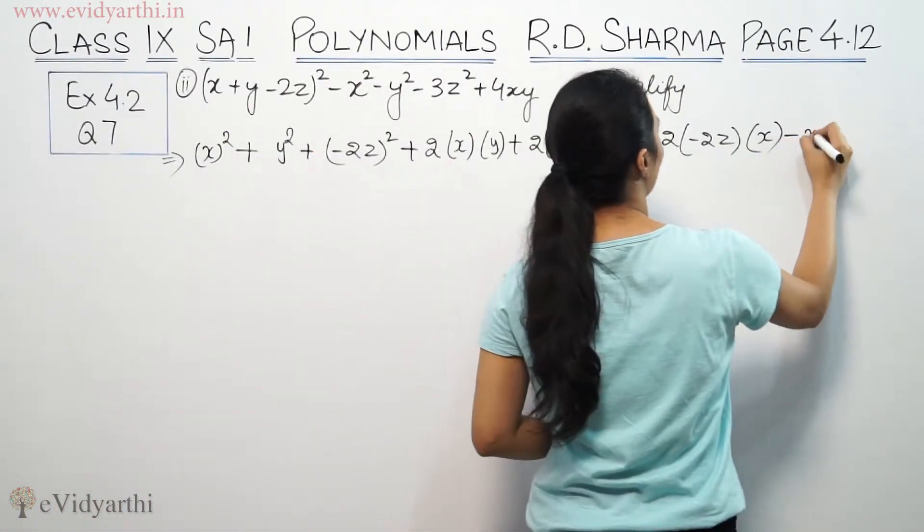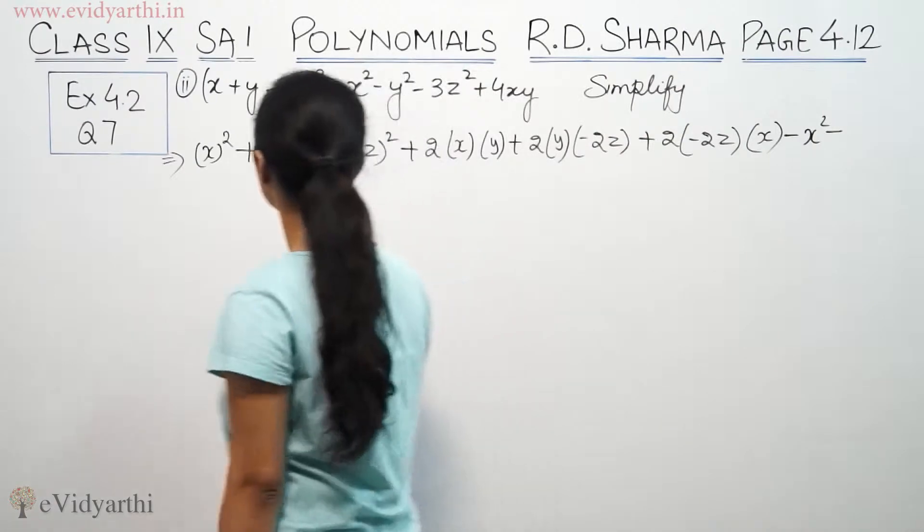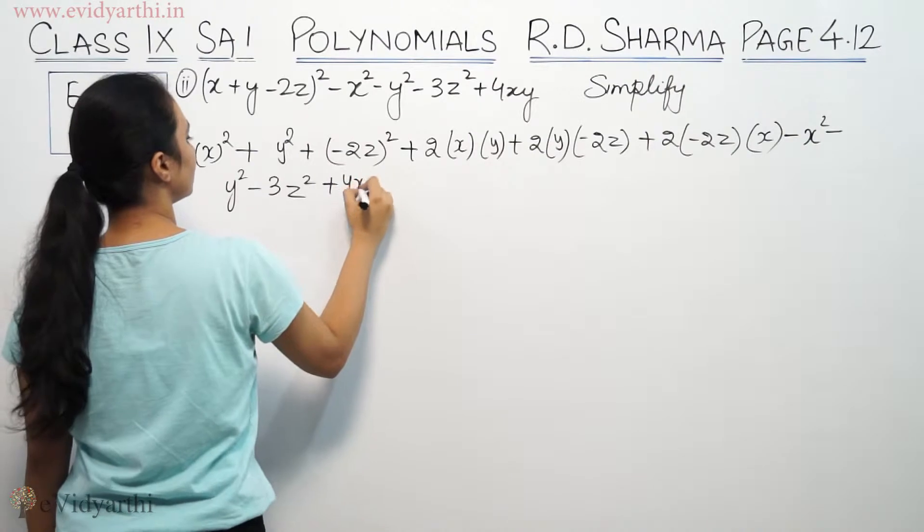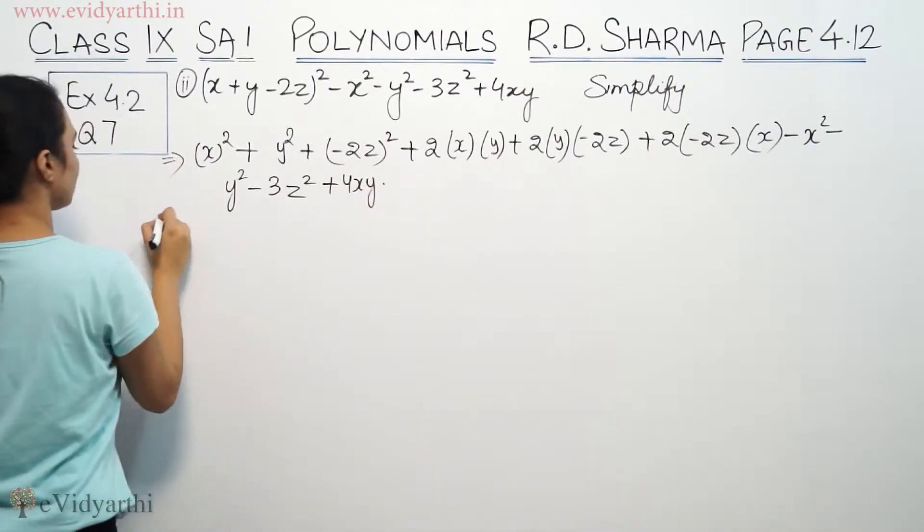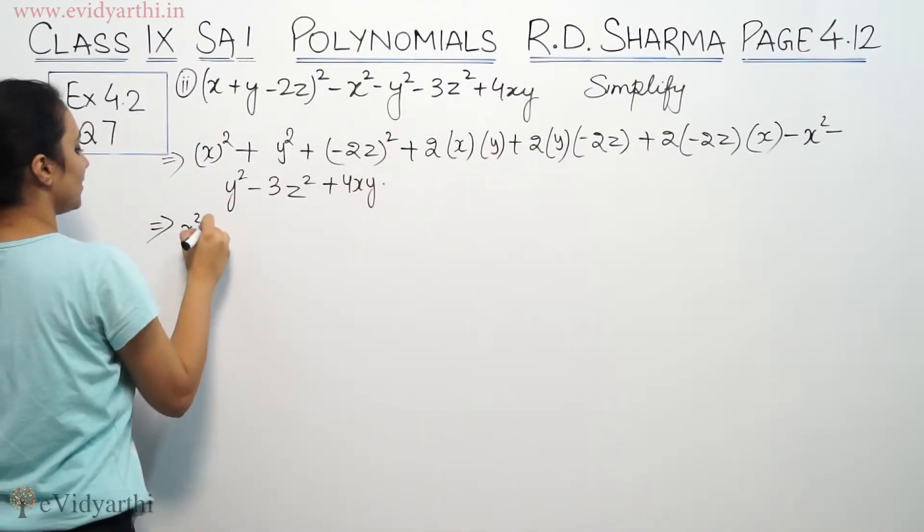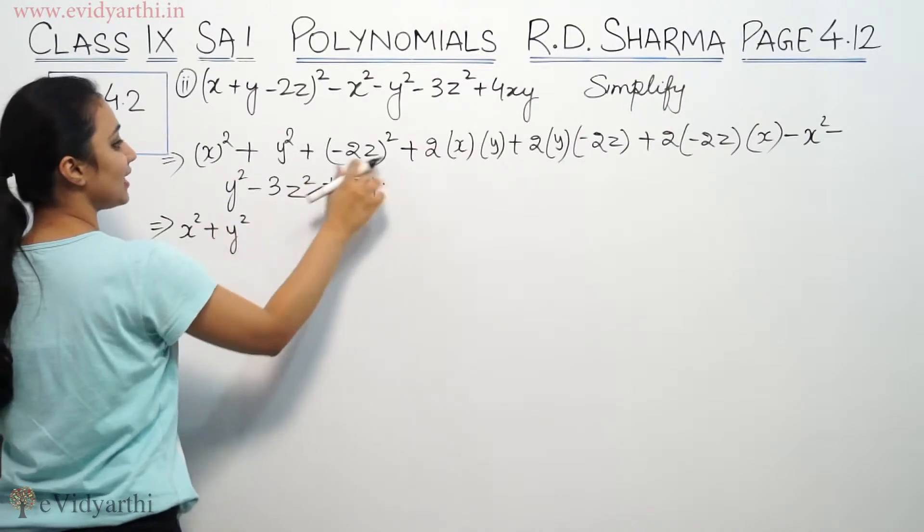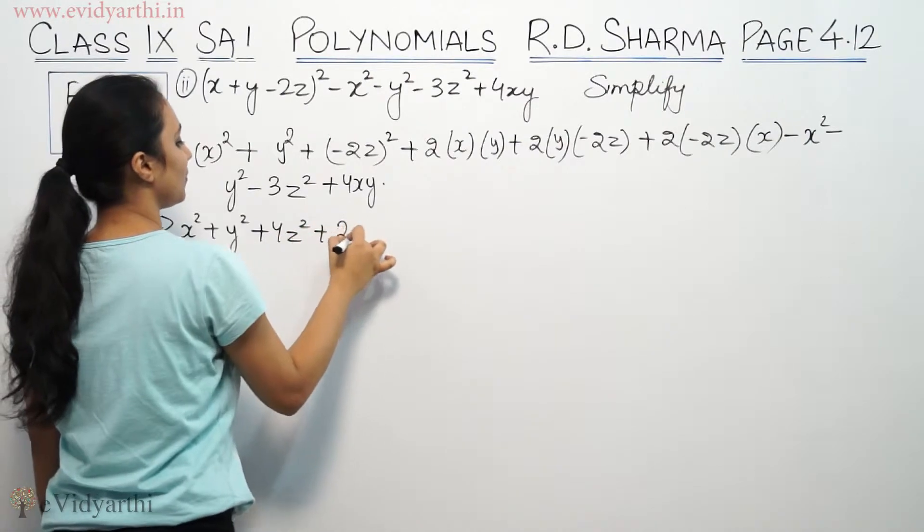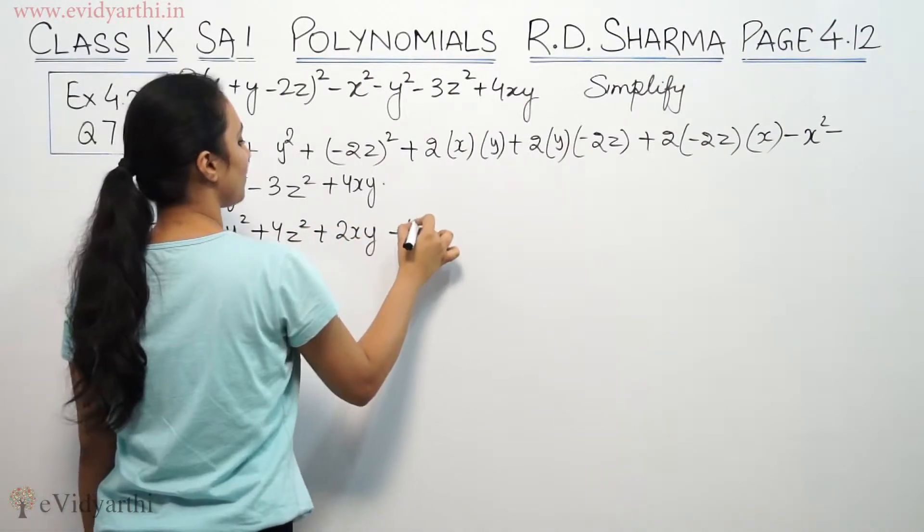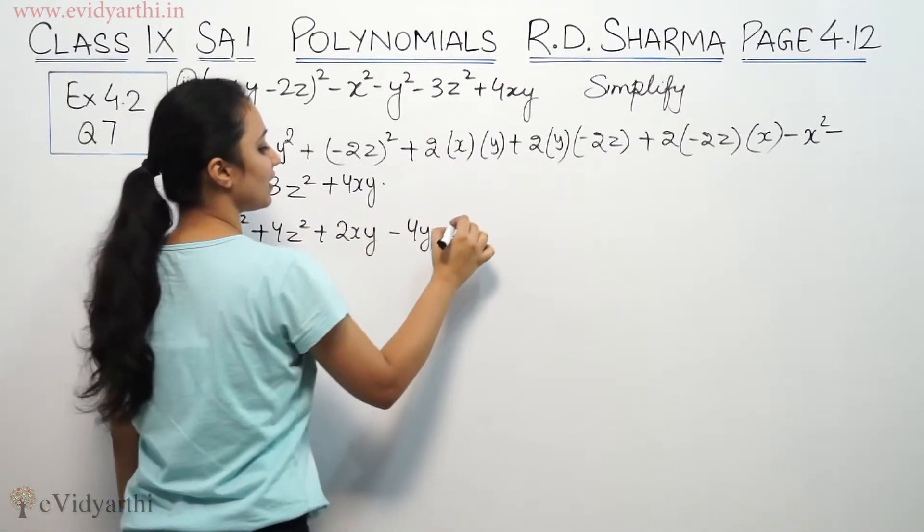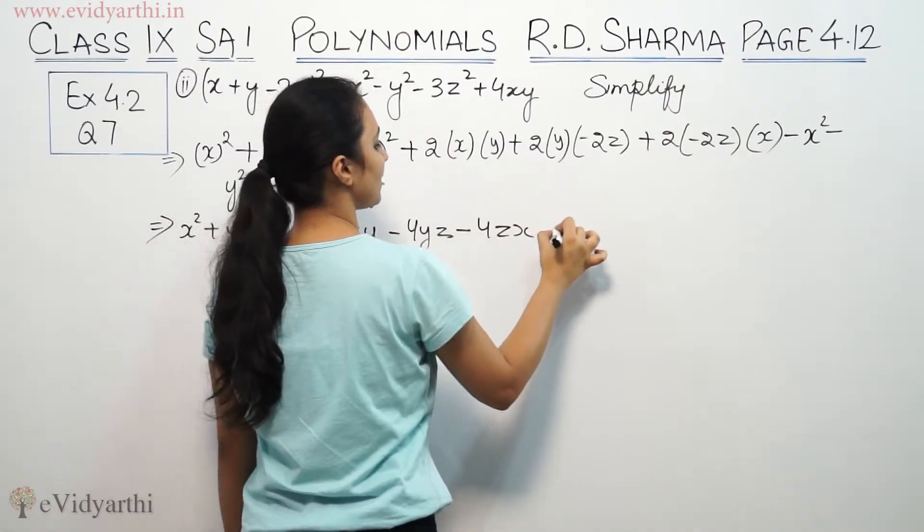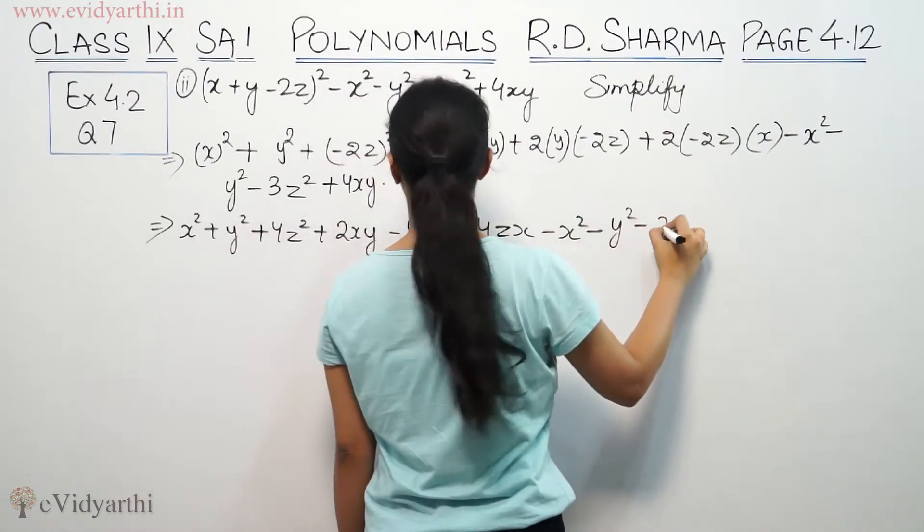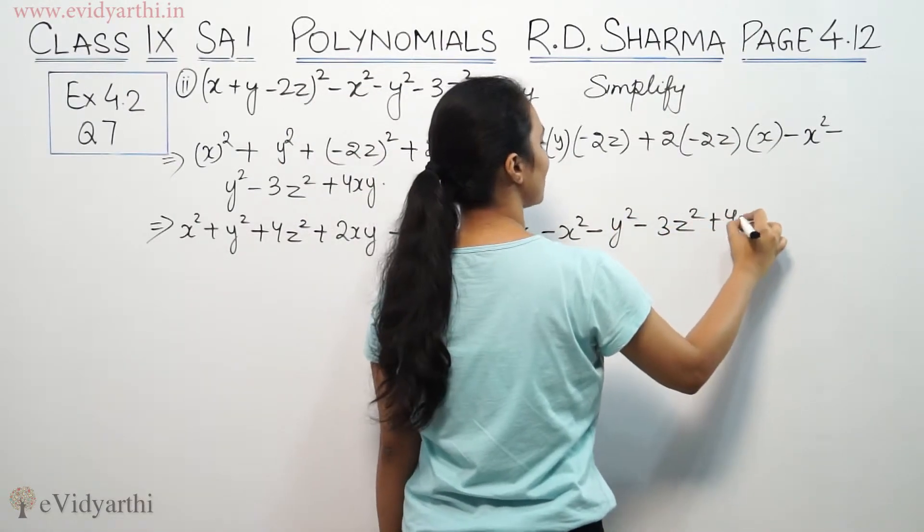Now, you do as it is written: minus x² - this is x² + y². This negative here, we can even write as plus 4z² + 2xy - 4yz - 4zx - x² - y² - 3z² + 4xy.